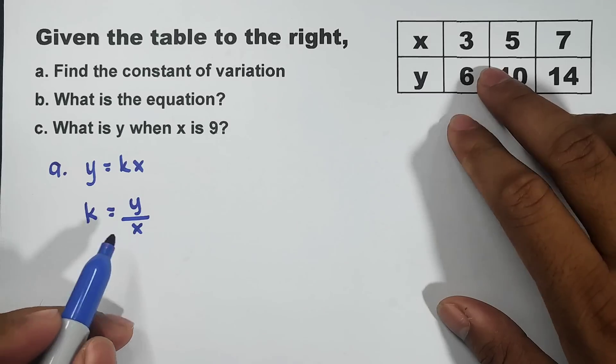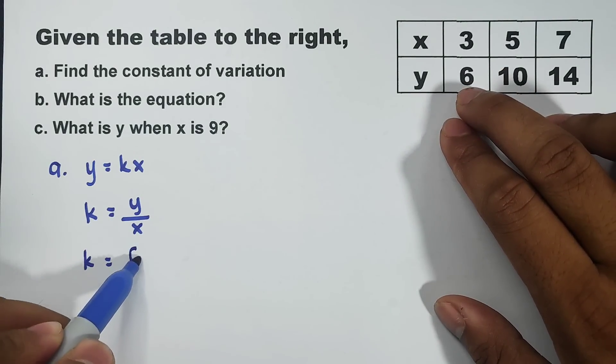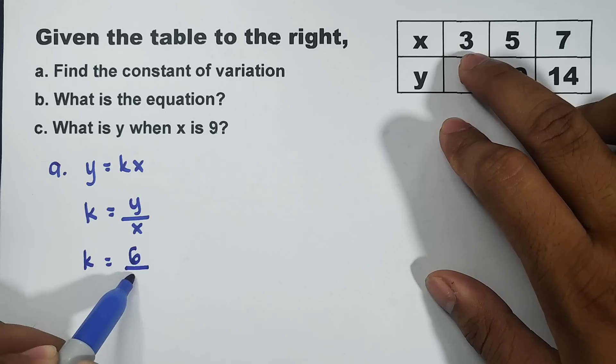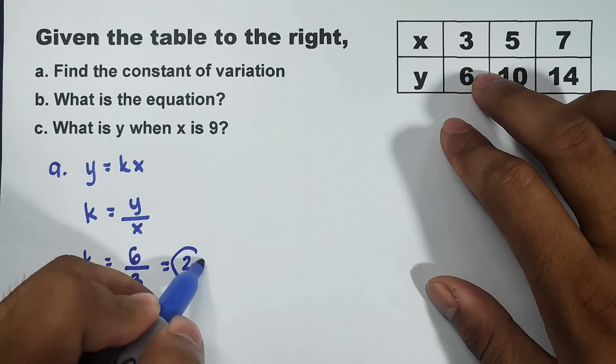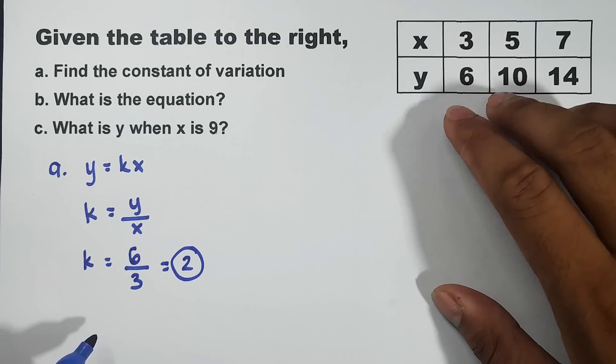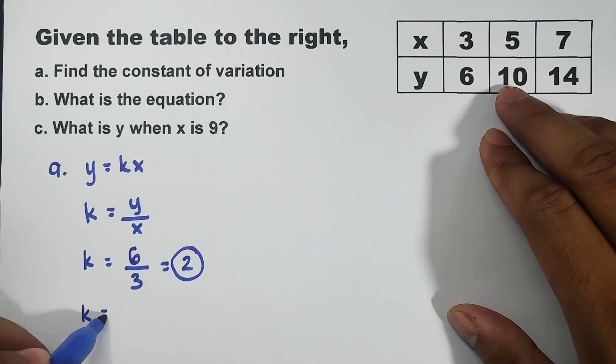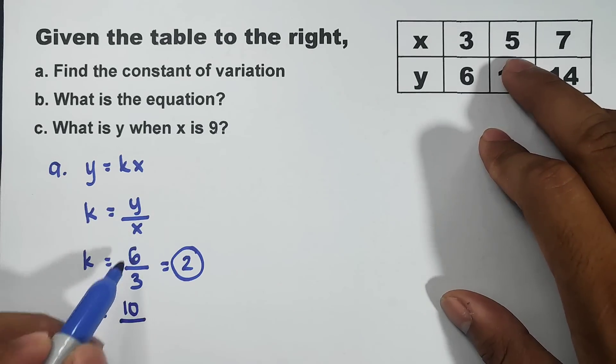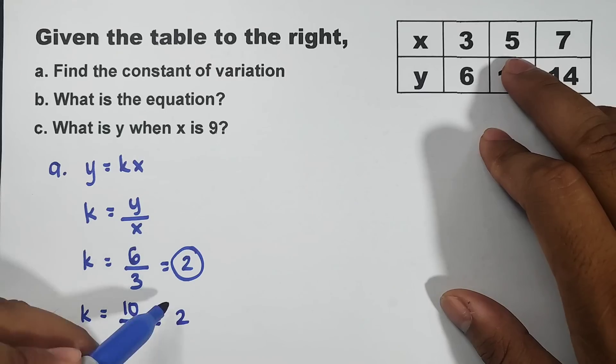So, try natin. Your k equals y, so 6, over x which is 3. What is the answer? The answer is 2. So, not yet sure. We need to see if they are all the same. Let's try this one. K equals y which is 10, over your x which is 5. 10 divided by 5 equals 2. So, parehas din.